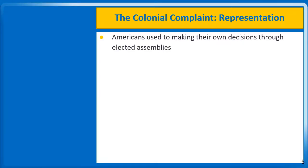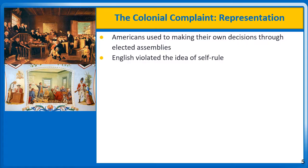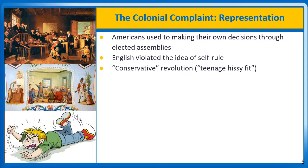It wasn't just Britain's demand for money that stirred up the colonists. Under the principle of salutary neglect, Americans had grown used to making their own decisions through their elected assemblies. When the English imposed new taxes without the approval of the colonial assemblies, they violated the idea of self-rule. The result was an unusual revolution. Most revolutionaries rise up against regimes that have long oppressed them. In contrast, the Americans fought to preserve rights that they had been exercising during the many years of salutary neglect. Historians therefore describe the American Revolution as a conservative revolution, which, if you compare the violence and turmoil to the French Revolution that would happen a few years later, it really was.